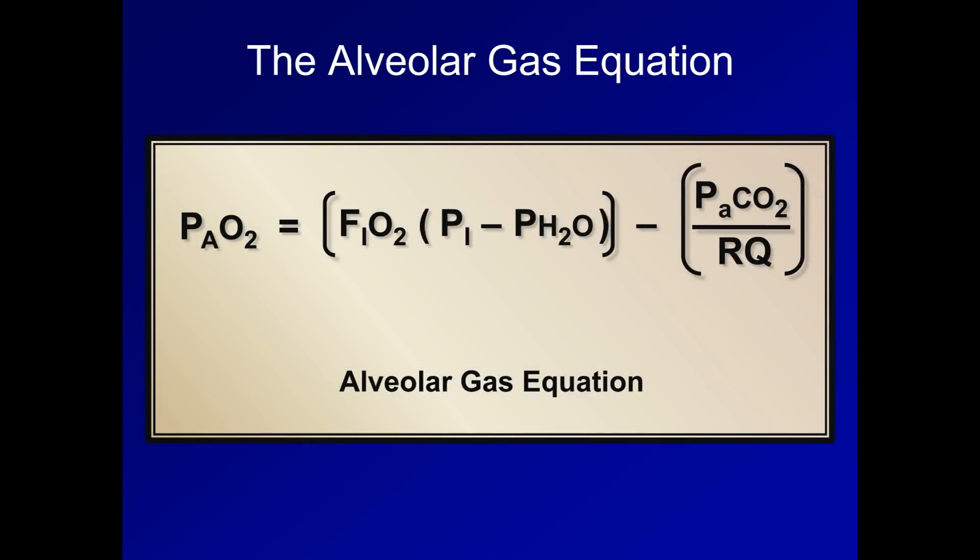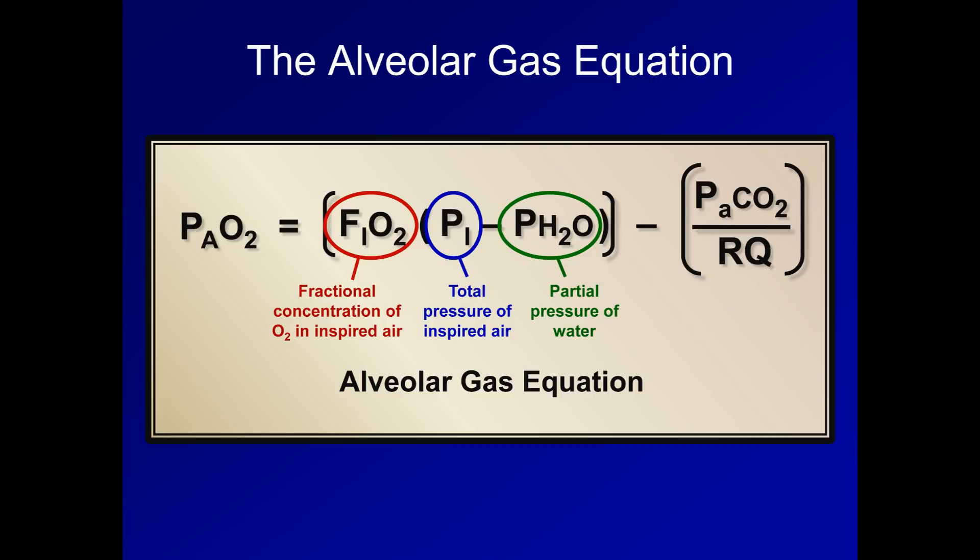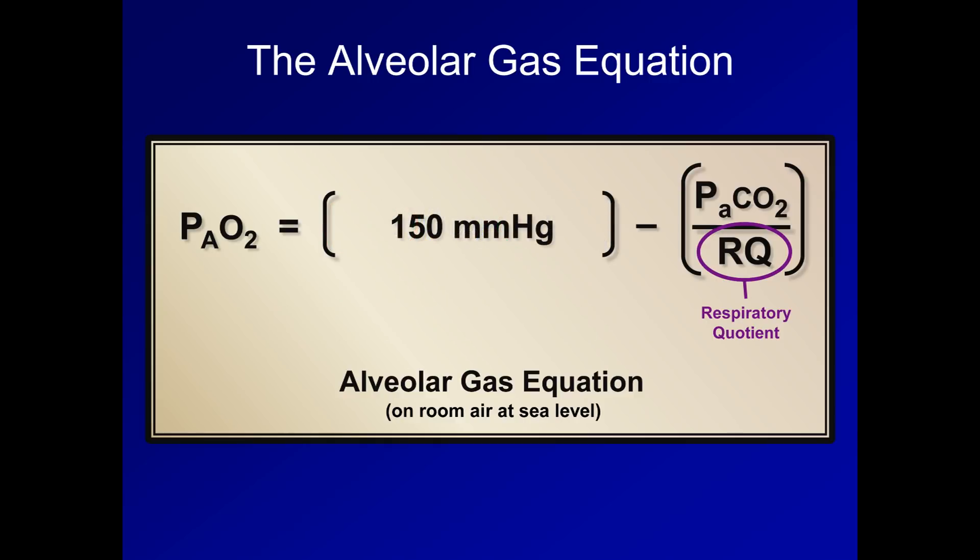To remind you, here is the alveolar gas equation. What do these unfamiliar variables represent? FiO2 is the fractional concentration of oxygen in inspired air. Pi is the total barometric pressure of inspired air. And pH2O is the partial pressure of water in the alveoli. RQ is an interesting variable known as the respiratory quotient. The respiratory quotient, in the most basic sense, is the ratio between carbon dioxide production and oxygen consumption and is related to the patient's diet. This equation is a little unwieldy, but luckily in some circumstances it can be simplified. For example, for a patient breathing room air at sea level, the FiO2 is 21% or 0.21, Pi is 760 mmHg, and pH2O is 47 mmHg. These three values simplify to 150.